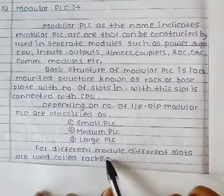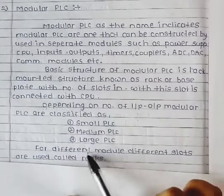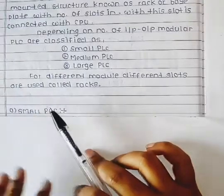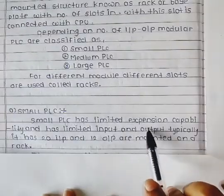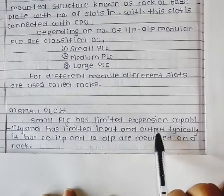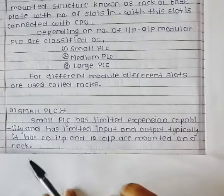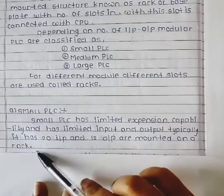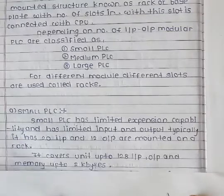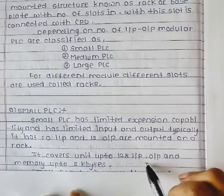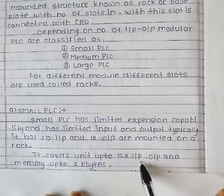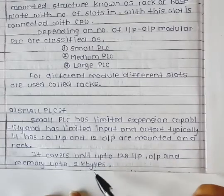For different modules, different slots are used, called a rack. The small PLC has a limited expansion capability and a limited number of inputs and outputs — 20 inputs and 12 outputs mounted on a rack. It covers units up to 128 inputs, outputs, and memory up to 2 kilobytes.